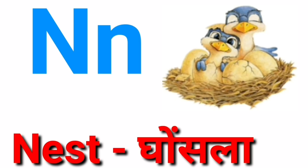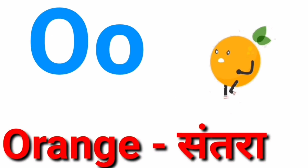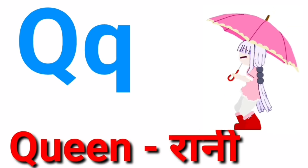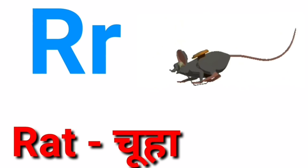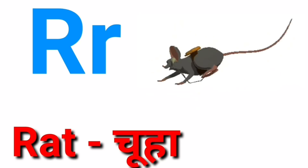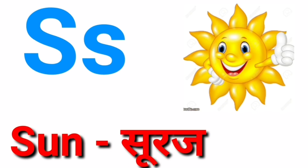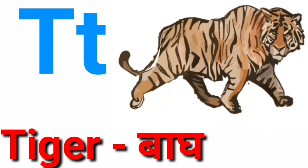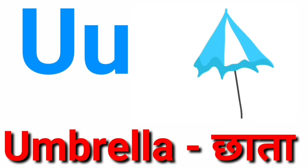O for orange, P for parrot, Q for queen, R for red, S for sun, T for tiger, U for umbrella.